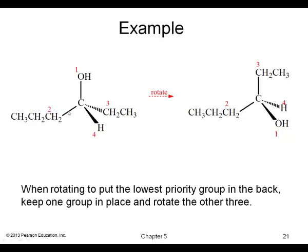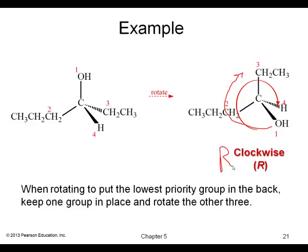Here's an example where group four is in the front rather than the back. We need to rotate it so group four goes to the back. When we do and go from one to two to three, the direction is clockwise — so this molecule is R.